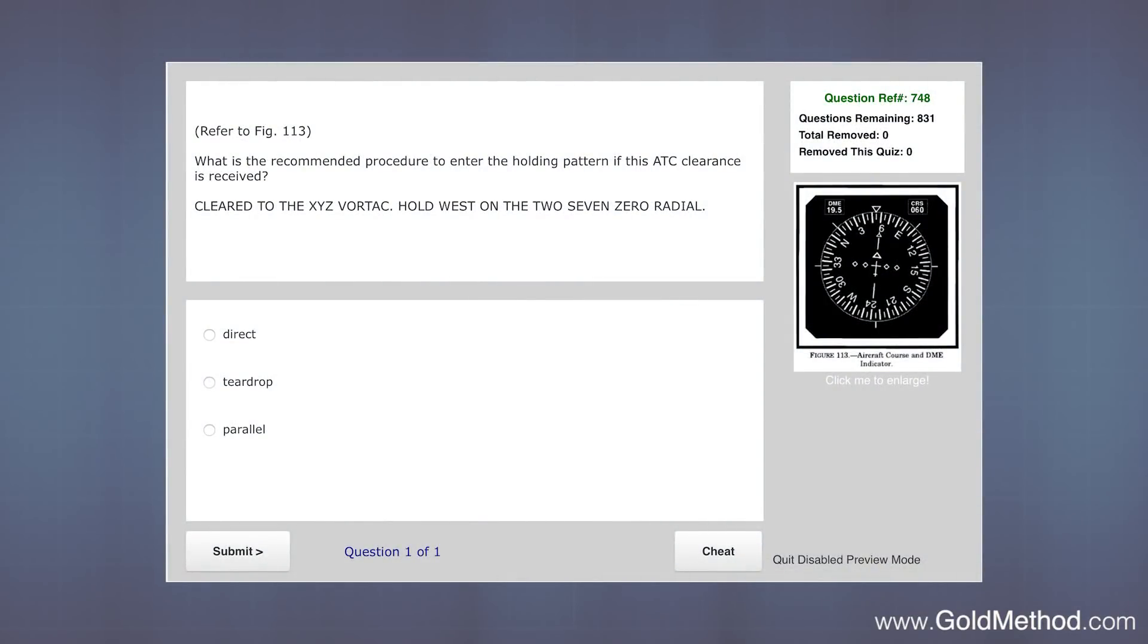So let's take a look at a couple examples that you may see on your test. What is the recommended procedure to enter the holding pattern if this ATC clearance is received? Let's take a look at the Vortec and note that the question says to hold west. This is referring to the location of the inbound leg heading towards the Vortec. So we will hold west of the Vortec while using the 270 radial as our inbound leg. Since the clearance did not specifically mention which way to turn, we are to assume that the standard rate right turns are going to apply. Meaning our holding pattern will look like this. Then we need to draw our line through the fix in the holding course, dividing the area into 70 and 110 degrees sectors.